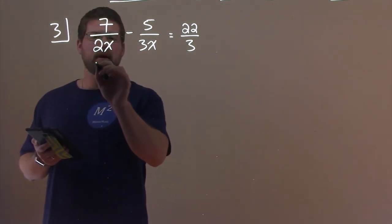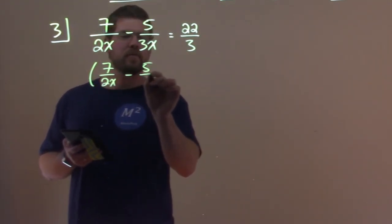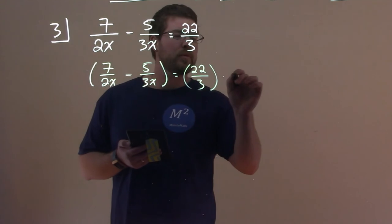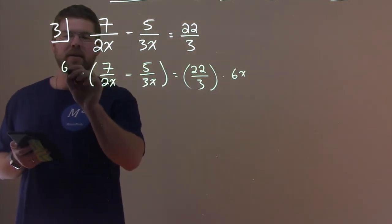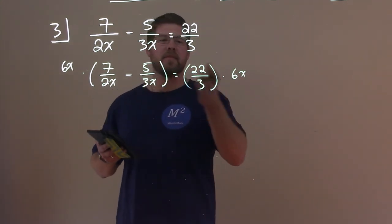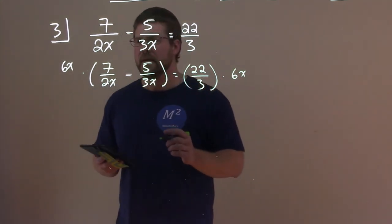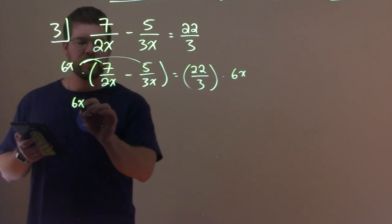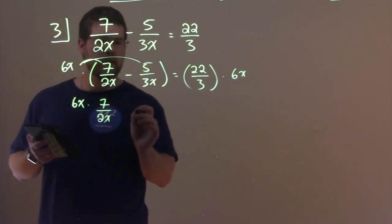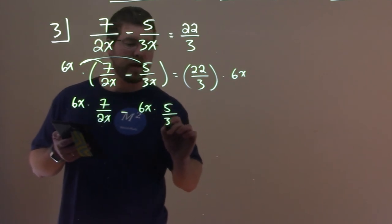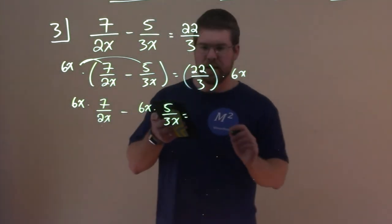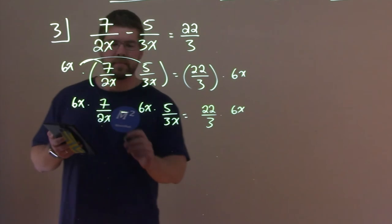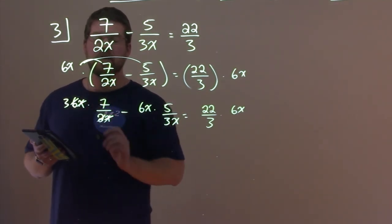So we're going to rewrite this: 7 over 2x minus 5 over 3x equals 22 over 3, and multiply both sides by 6x. This will eliminate the denominators. We distribute 6x to both parts: 6x times 7 over 2x minus 6x times 5 over 3x equals 22 over 3 times 6x.